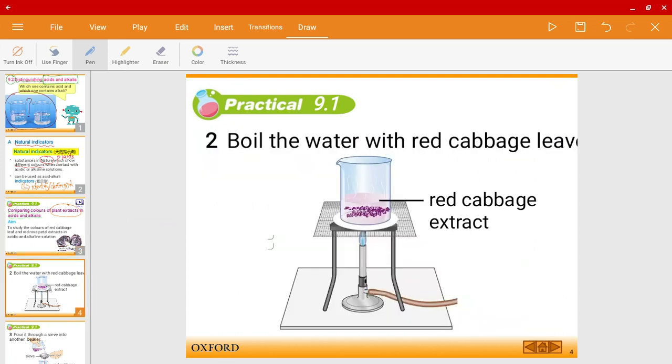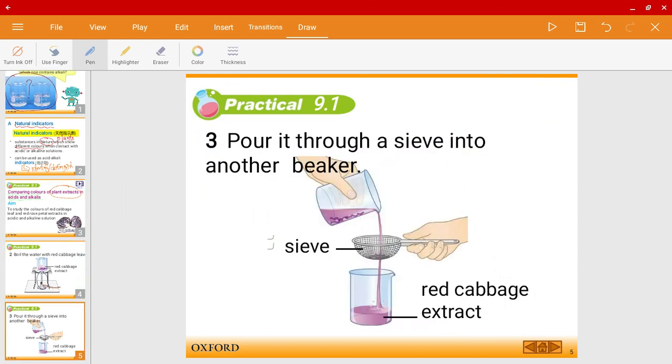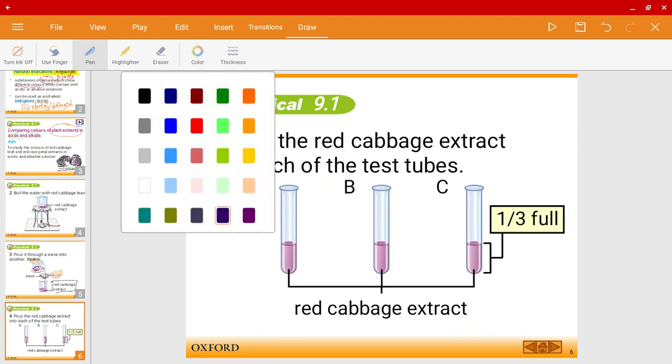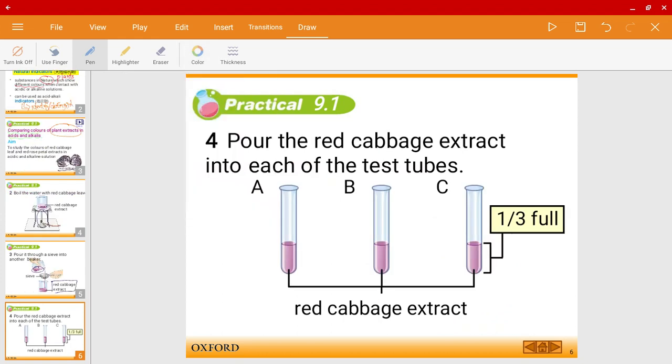Okay, now let's look at the experiment. So first of all, of course, you will need to cut the leaves and boil the cabbage leaves using a Bunsen burner. And then afterwards, you will need to get the extract out so that the leaves are remaining behind. And then you will pour the extract into three different test tubes, test tube A, B, and C.